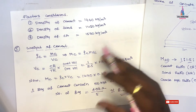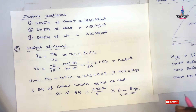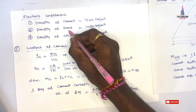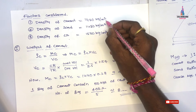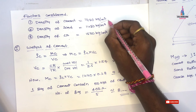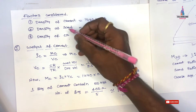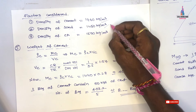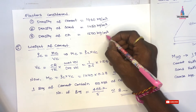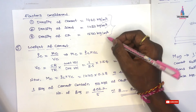This paper contains the calculation part related to cement. Before continuing, we need to consider the density values of the materials. The density of cement is 1440 kg per cubic meter. The density of sand is approximately 1450 kg per cubic meter. The density of coarse aggregate is 1500 kg per cubic meter. Note that these are assumed values; experimental tests should be conducted to verify actual densities.